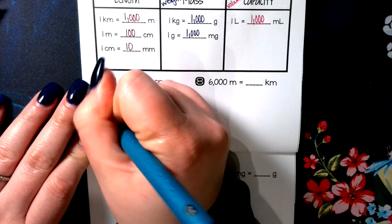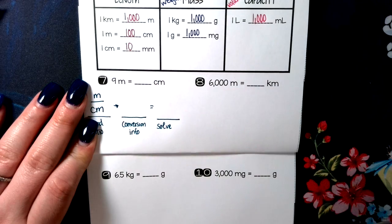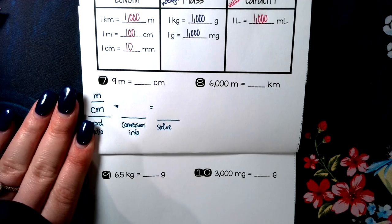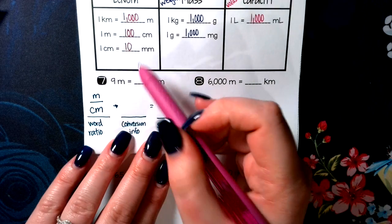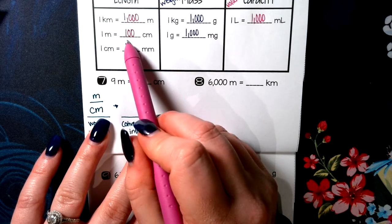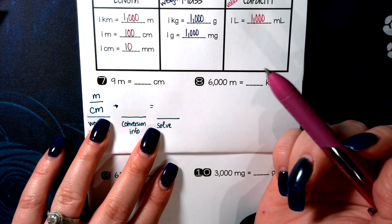And I want to know how many centimeters that is. So my word ratio, I'm comparing meters and centimeters. Based on my information up here, I see that one meter is 100 centimeters.